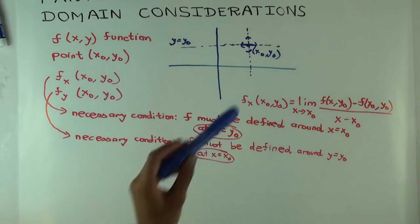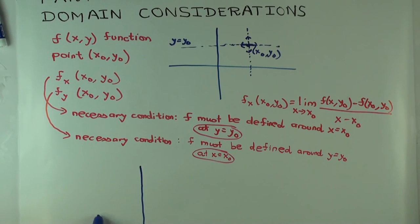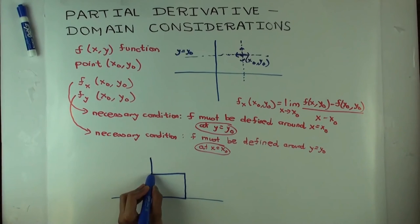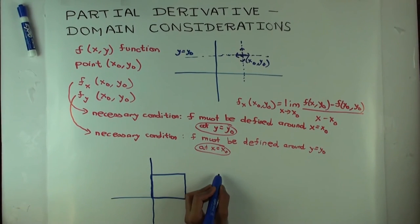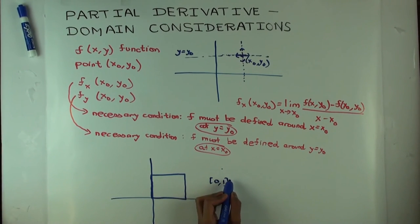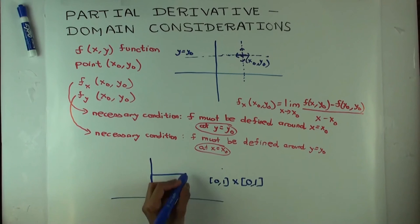Let's take a simple example. Suppose you have a function whose domain is the unit square: the closed interval [0,1] cross the closed interval [0,1]. So the domain is this unit square, meaning 0 ≤ x ≤ 1 and 0 ≤ y ≤ 1.